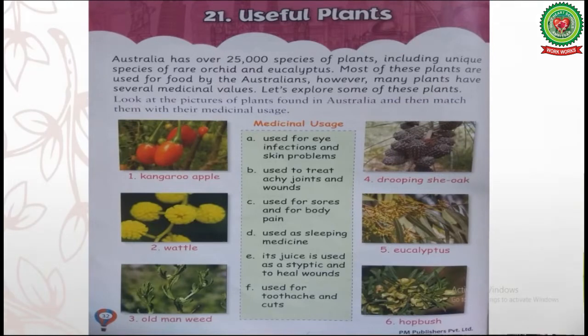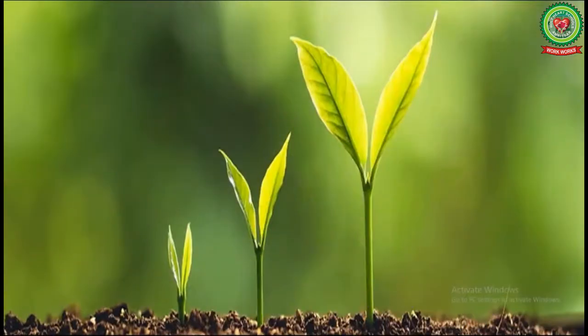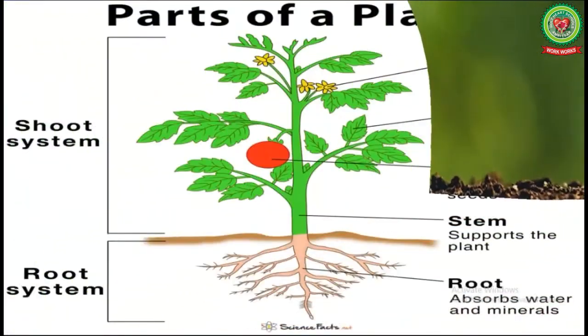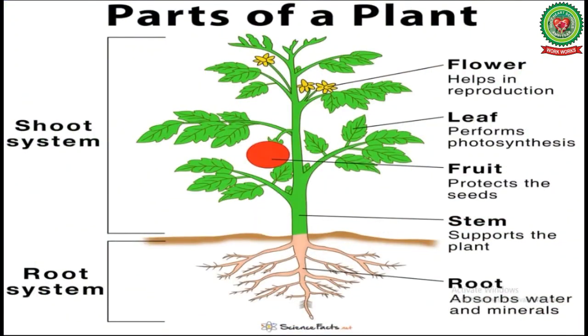A plant has different parts that work together for its growth. Root, flower, leaf, fruit, and stem are the main parts of a plant.